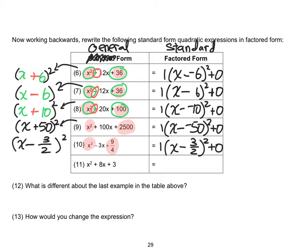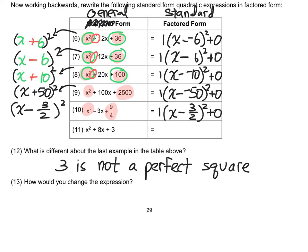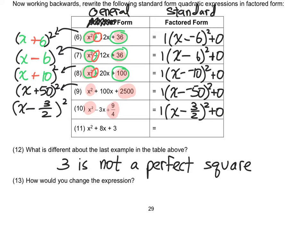Now we're getting to the point where we expand upon this, because in that last example, x squared plus 8x plus 3 — well, 3 is not a perfect square. And unless you want to include radicals, we're going to want to make an adjustment here. In number 12, where it says what's different about the last example in the table, 3 is not a perfect square. So we've got to make an adjustment. The short answer is: let's make it a perfect square.